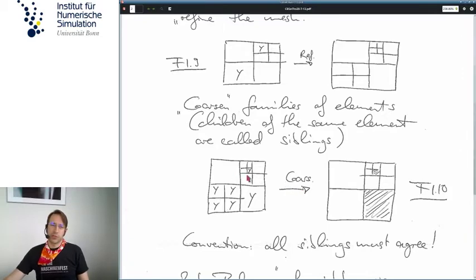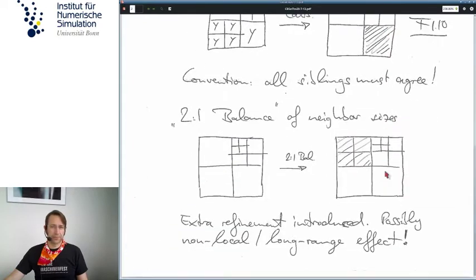We would then decide to coarsen these children into this big element. We could of course think, well there is one mark in this small element, but if the marks in the other three are missing, we prefer to just leave it at that, which you see in this situation. That is conventionally all siblings must agree on this tag. And another thing you notice is that these elements here are a lot smaller than these elements, which as we find out later will make things a little more complicated than it needs to be.